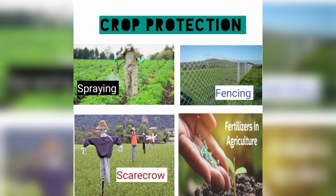In drip irrigation, pipes have holes through which water drips into the soil. In crop production, farmers may spray for better yield, grow scarecrows, build fencing to protect crops from animals, and spread fertilizers. The soil is made more fertile by adding manure or fertilizers.